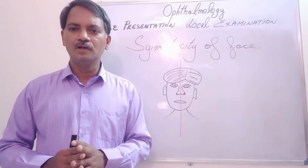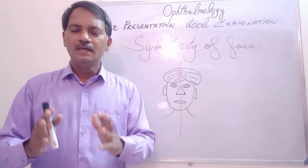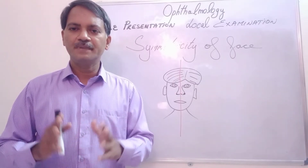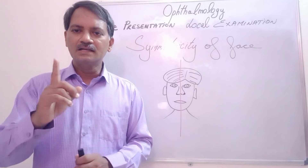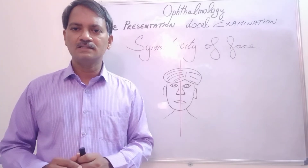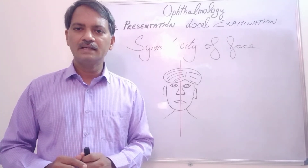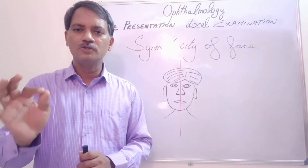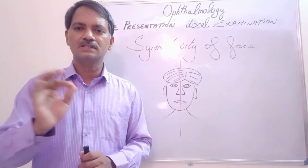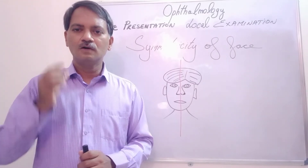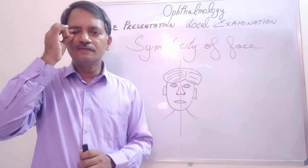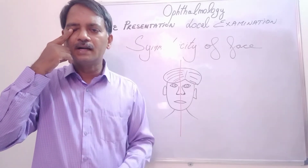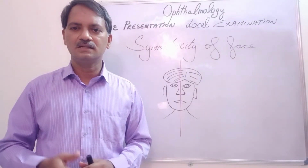This is a classical example of facial asymmetry. Suppose the patient has a third cranial nerve paralysis — on that side, the levator palpebrae superioris muscle is paralyzed, so that eye will be closed while the other eye remains open, causing asymmetry.